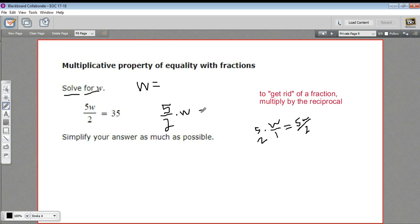And then we've got equals 35. The reason I wrote it that way is because we want to look at this fraction by itself. This is the important part. It's the part we want to get rid of. It's being multiplied by w, and we want to get rid of that. And to get rid of a fraction, you multiply by the reciprocal.